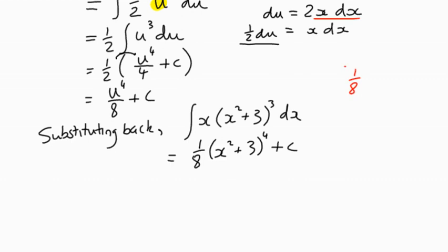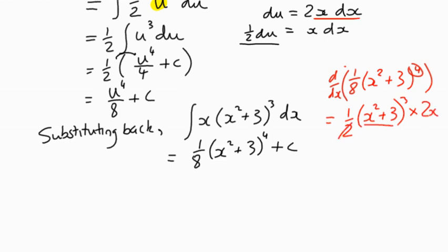What's the derivative of that? We multiply 4 times 1/8 to get 1/2. We write down the inside term, reduce the power by one, multiply by the derivative of the inside term, which is 2x. We cancel out to get x times (x² + 3)³, which is what we started with. So that's integration by substitution.